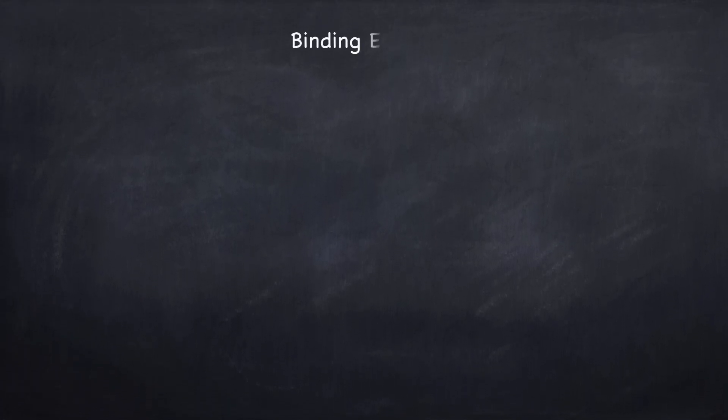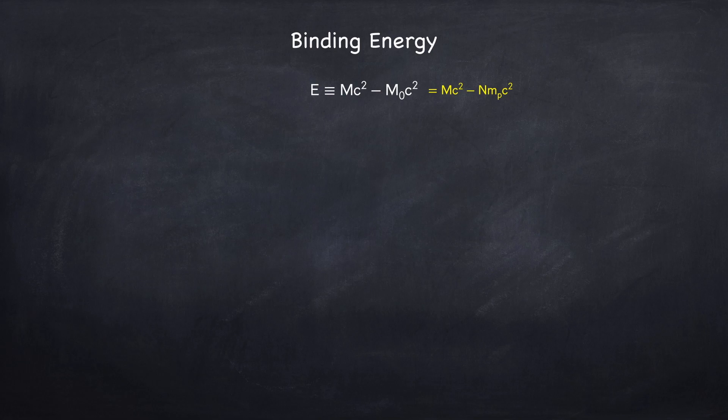Now let's move on to the binding energy. We define the binding energy as the difference between the gravitational mass and the rest mass. An important point is that the total baryon rest mass is an invariant to all observers — if one observer counts 100 protons, everyone else must count 100 protons. This is not like length and time, which differ from one observer to another.